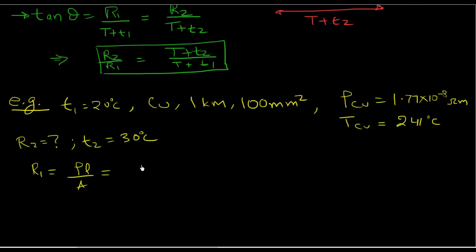So R1 is equal to rho L over A, which means 1.77 times 10 to the power minus 8. Length is 1 kilometer, but it needs to be meters because that's the SI unit for length. Cross sectional area is given 100 millimeters square. But again, that needs to be in meters square if you remember from our last video. So if I calculate this, I believe I'm going to get a value of 0.177 ohms.